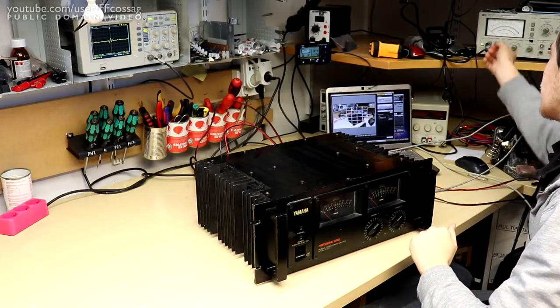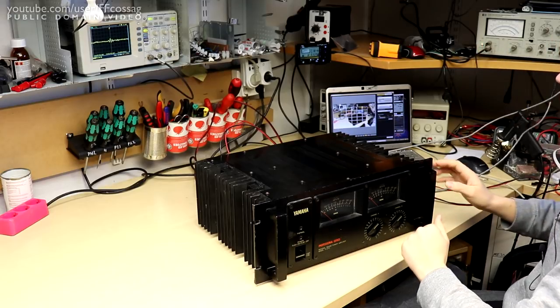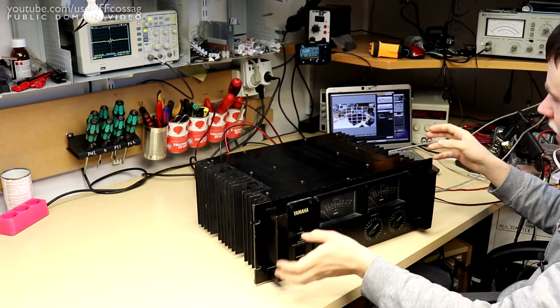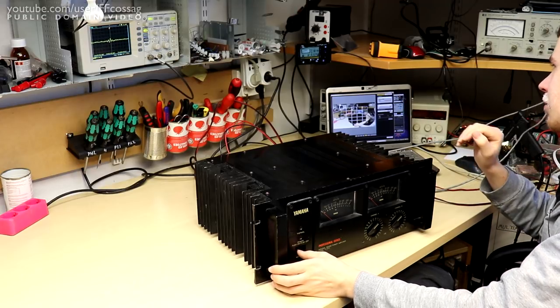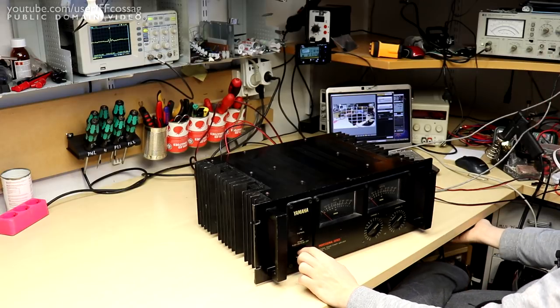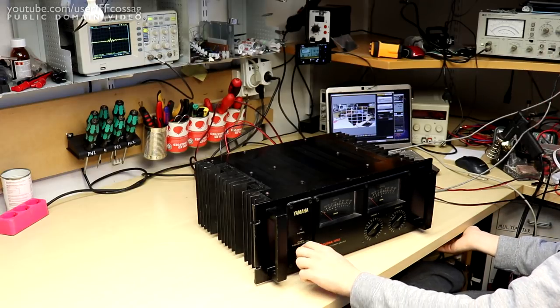An issue we could run into is I get a bit of a ground loop through the scope there, so it could mess with us slightly. But let's just waste no further time. This is plugged in. I'm looking at the power meter and should be ready to power on. One hand on the emergency power off switch.